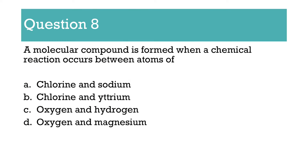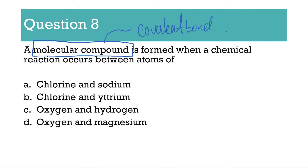Number 8: a molecular compound is formed when a chemical reaction occurs between atoms. The key word here is molecular compound — you should be thinking covalent bond. Remember, that is a non-metal plus a non-metal. Oxygen and hydrogen are non-metals. Everything else has either a metal and a non-metal. The key point: molecular compound means covalent bond.